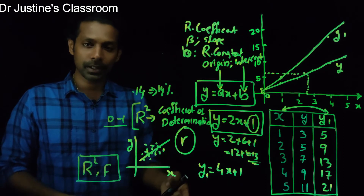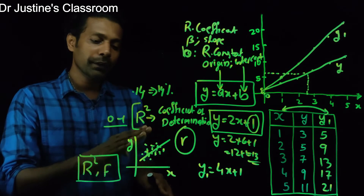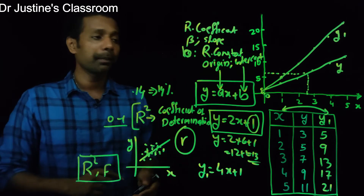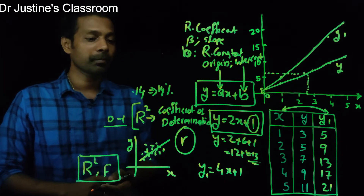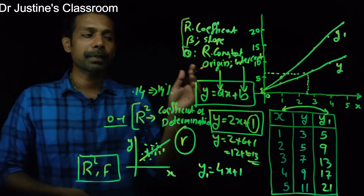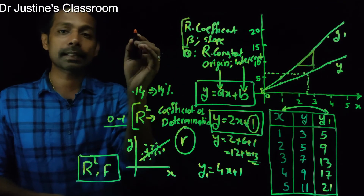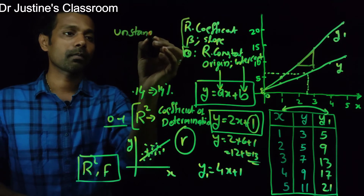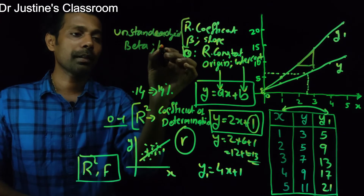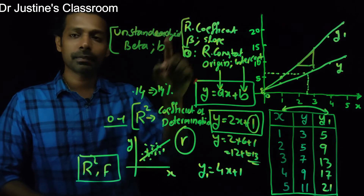Once a straight line relationship is established, the second task is to determine the slope of the regression line. If the slope is very low, there is little relationship between the variables; if the slope is very high, the independent variable contributes a lot to the dependent variable. The slope is represented by the regression coefficient or beta. The primary beta value calculated — the basic slope — is called the unstandardized beta, represented with the symbol B.